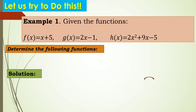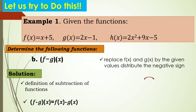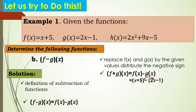Next, how about the difference? We have f minus g of x. Recall the definition of subtraction of functions: f minus g of x equals f of x minus g of x. Replace f of x and g of x by the given values and distribute the negative sign. We have f of x as x plus 5, and g of x as 2x minus 1. Since this is subtraction, you need to distribute the negative sign to the quantity in parentheses.